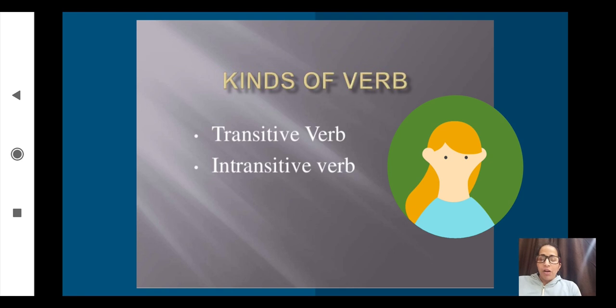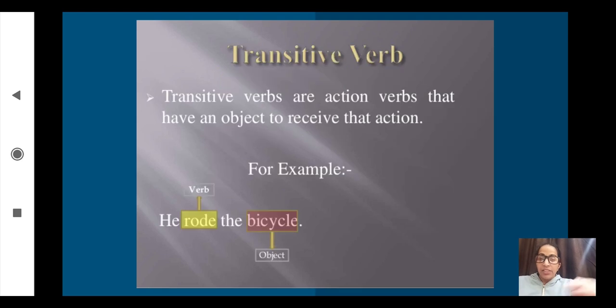Next we will talk about kinds of verb in a sentence. We have two kinds of verb in a sentence: transitive verbs and intransitive verbs.